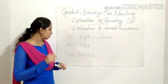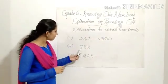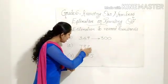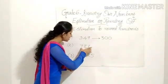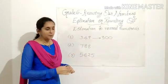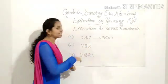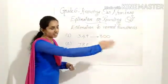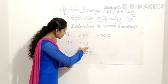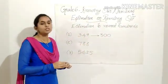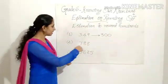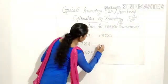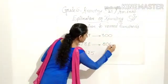The second example is 788. You have to first check: 788 lies between which numbers? 788 lies between 700 and 800, and it is near to 800. So we can take 800.